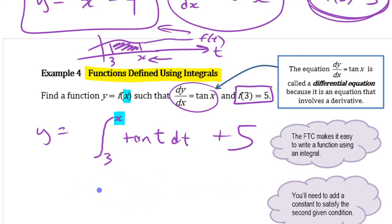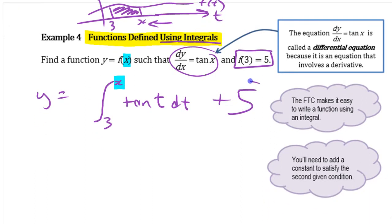The function that you can write is you can just write it using an integral. So this is defining a function using an integral, saying, start with 5, and then just do the anti-derivative of that from 3 up to wherever you're looking for. That's a function that has, because what's the derivative of this?